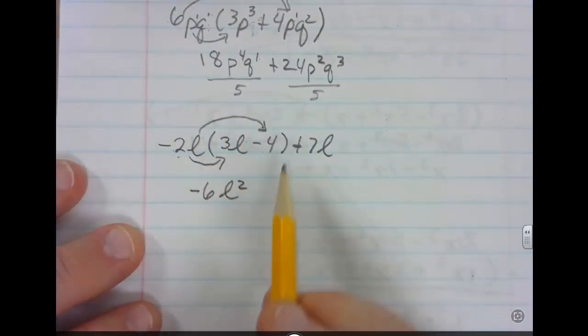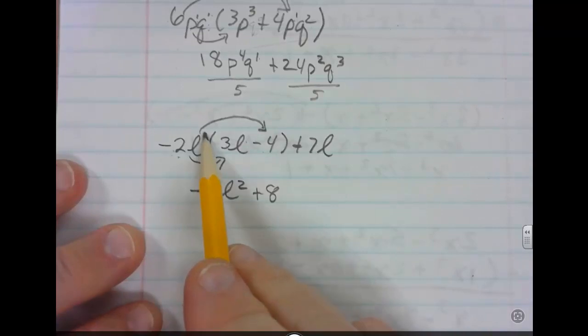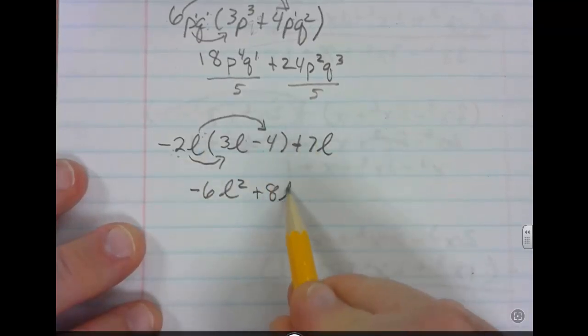Now we're going to distribute here. Negative 2 times negative 4 is positive 8. L to the first times no L is going to leave you with L to the first. Remember there's like an L to the zero power here.